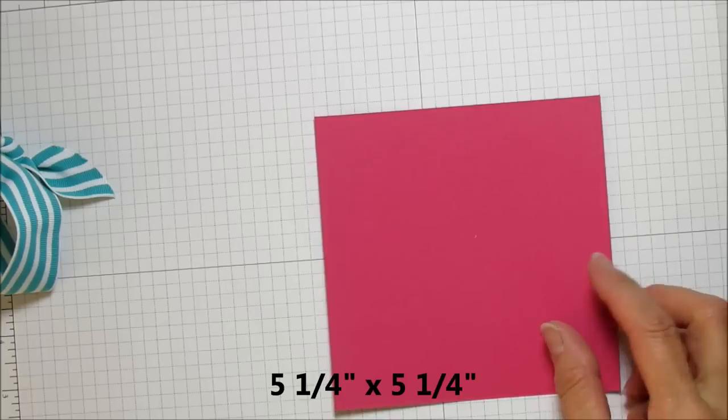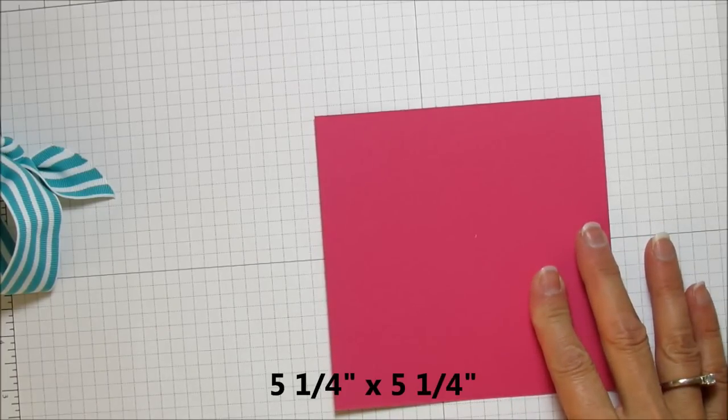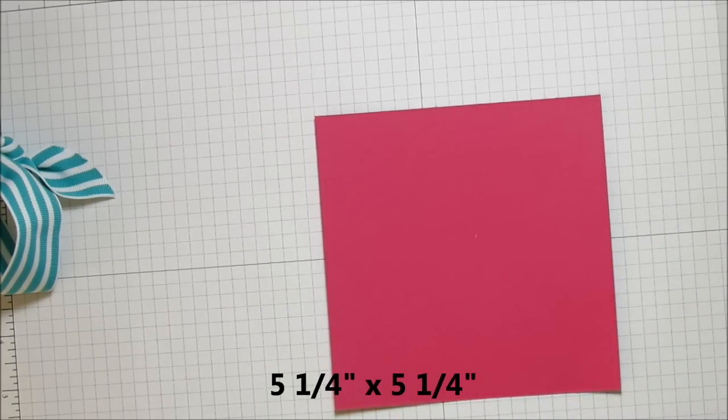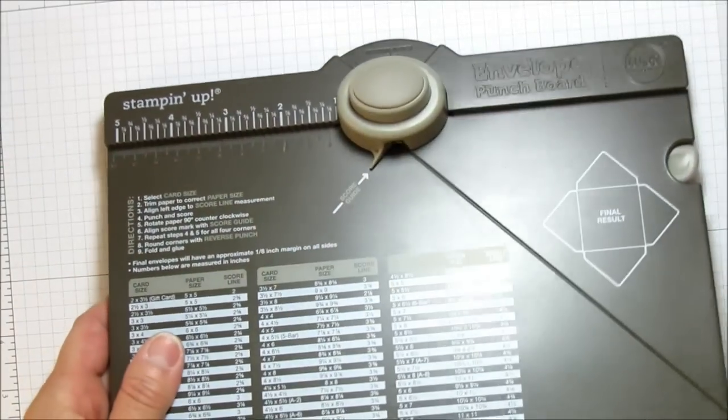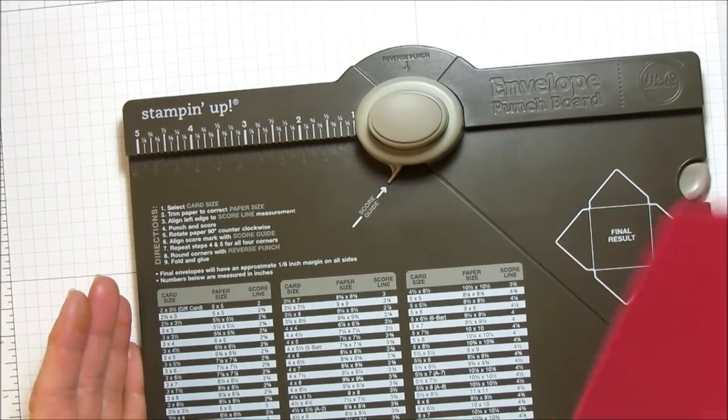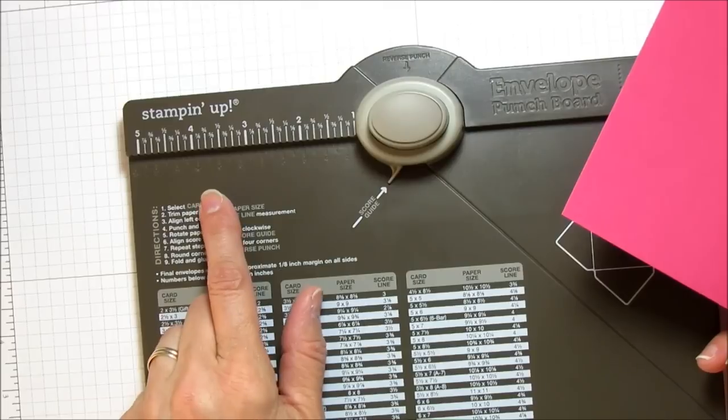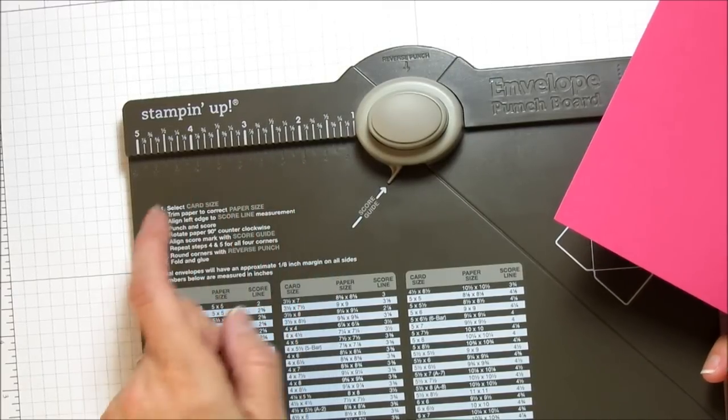For the 3x3 envelope you'll need a piece that's five and one quarter by five and one quarter. And this is the envelope punch board, and I'm sure a lot of you have seen these before.